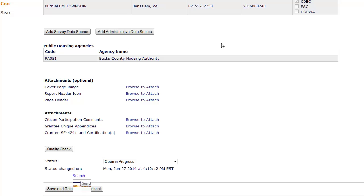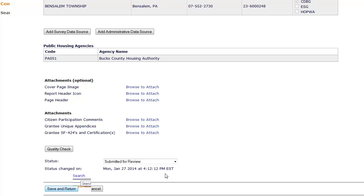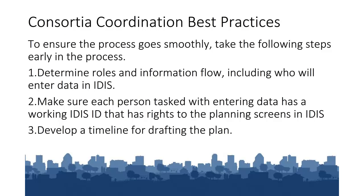When all members of the consortium are finished with their respective templates, the Lead Entity will update the status of the consortium plan to submitted for review on AD 25, which will trigger the submission of all of the templates. Templates cannot be submitted separately. To ensure the process goes smoothly, take the following steps early in the process: one, determine roles and information flow, including who will enter data into IDIS; two, make sure that each person tasked with entering data has a working IDIS ID that has rights to the planning screens in IDIS; and three, develop a timeline for drafting the plan.